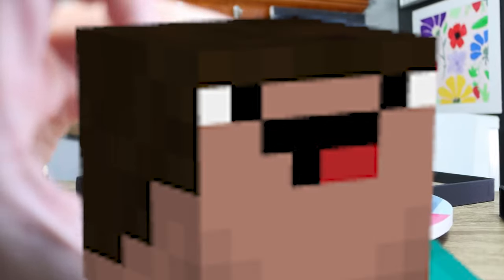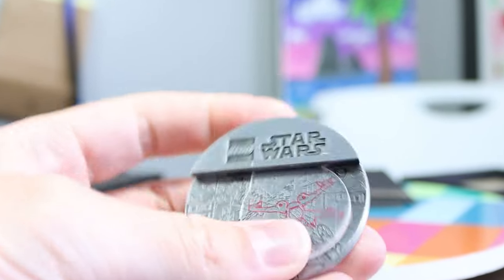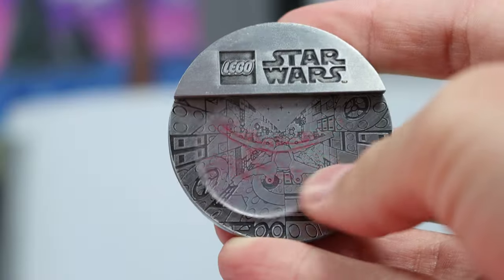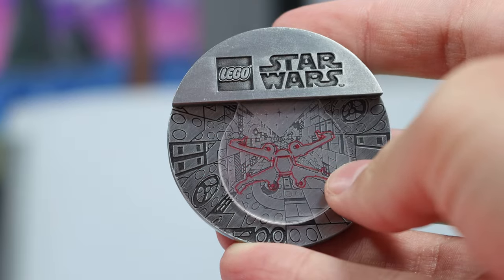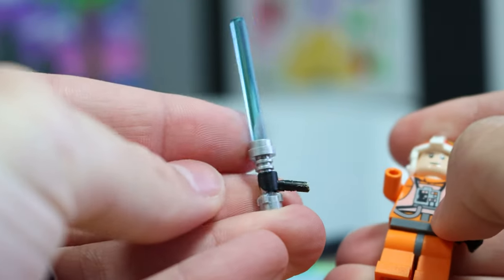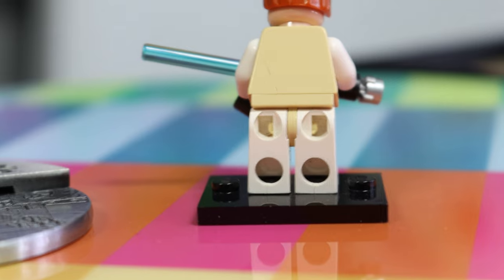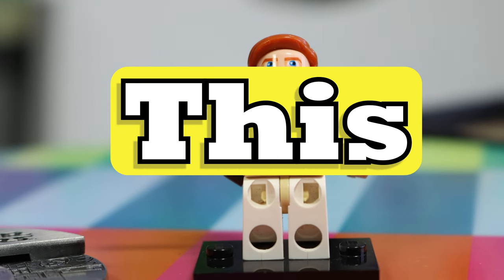This coin might be the dumbest thing that I've ever gotten from LEGO. What is the point of this? It has nothing to do with LEGO Star Wars. Literally anything else that had anything to do with LEGO would have been better than this. Luke's cut off hand from Empire Strikes Back better than this. Even a cracked torso would have been better than this stupid coin.